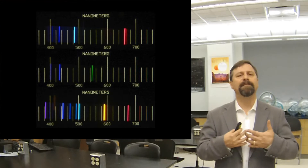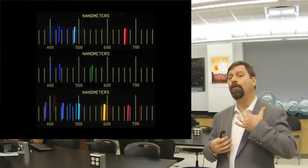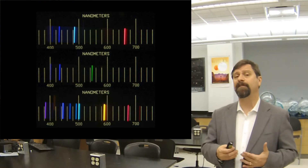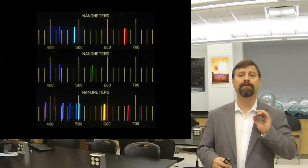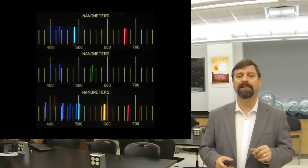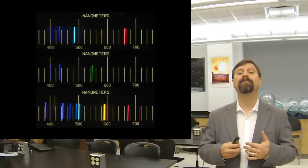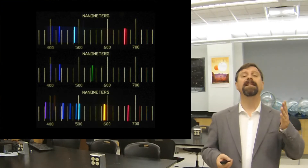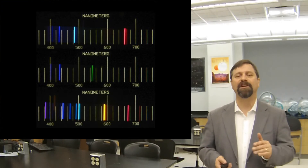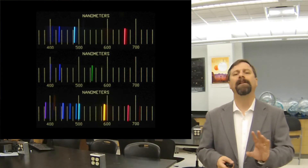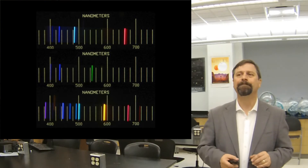If the material is emitting only at specific frequencies, not with a rainbow but with specific wavelengths of light, then if we pass it through a spectroscope we see lines of emission.